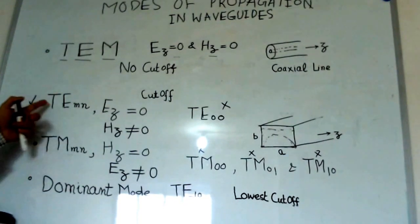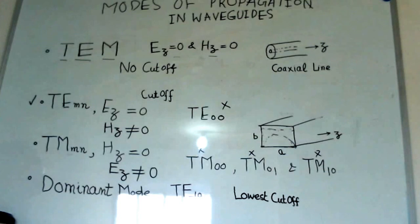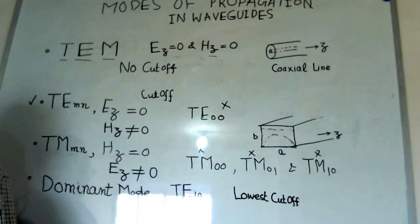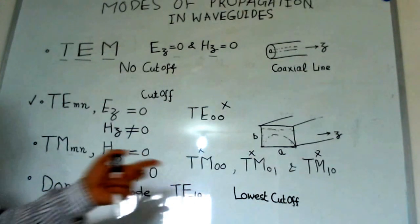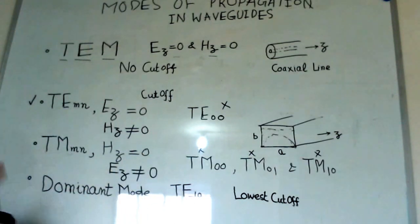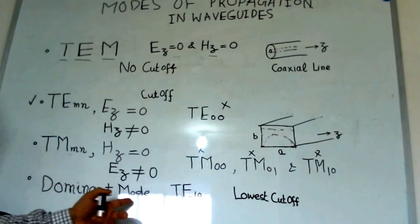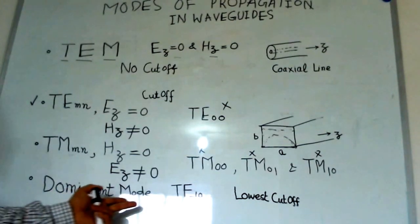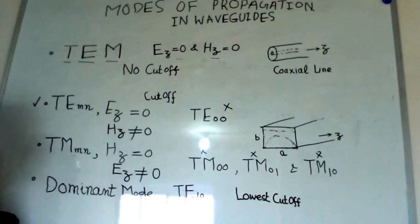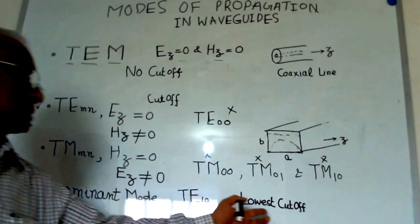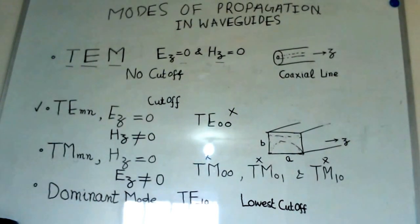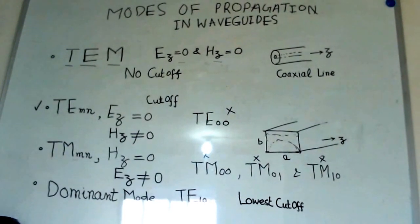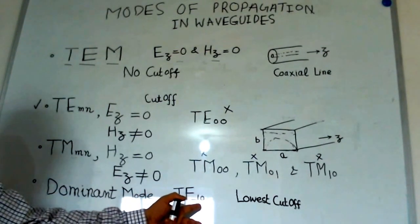Now, out of these modes, we have to see what is the most convenient kind of mode which is being used. There is a particular mode for a rectangular waveguide which we call as dominant mode. This is the most commonly used mode and this mode has the characteristic that it has the lowest cutoff frequency. This is indicated as TE10.